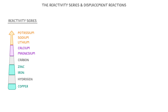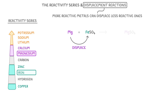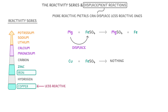Now the last thing we need to cover is displacement reactions. The idea here is that more reactive metals can displace less reactive ones. So if we put some magnesium into a solution of iron sulphate, then the magnesium would displace the iron to form magnesium sulphate plus iron, because magnesium is more reactive than the iron. Whereas if we added copper to a solution of iron sulphate, then nothing would happen, because copper is less reactive than iron, so can't displace it.